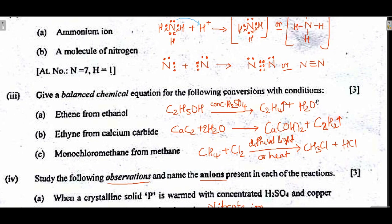Balanced chemical equations with conditions. Ethene from ethanol: use concentrated sulfuric acid as a dehydrating agent at 170°C. Ethyne from calcium carbide: CaC2 + 2H2O → Ca(OH)2 + C2H2; balanced equation. Monochloromethane from methane: substitution reaction — CH4 + Cl2 under diffuse sunlight or heat gives CH3Cl + HCl; already balanced.